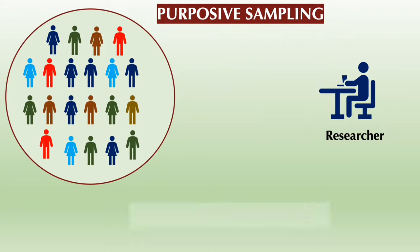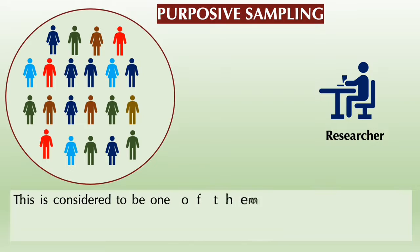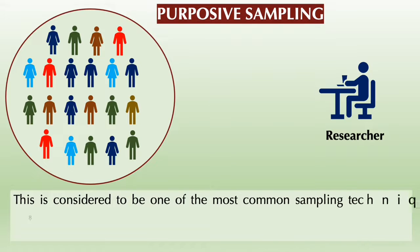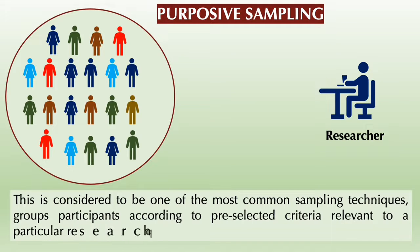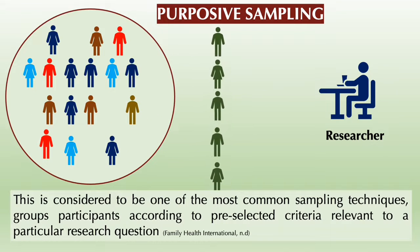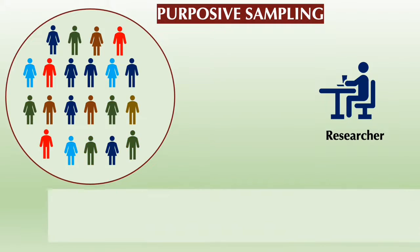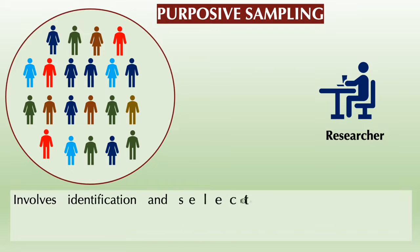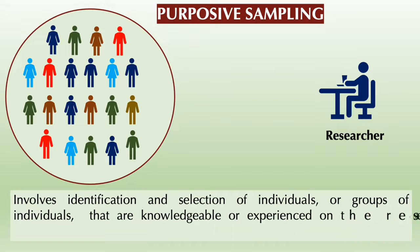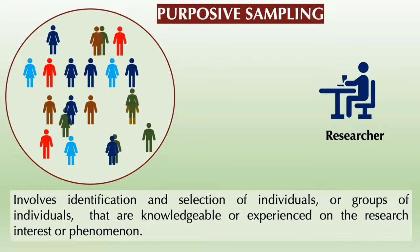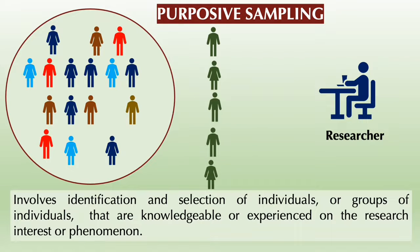Second is purposive sampling. This is considered to be one of the most common sampling techniques. It groups participants according to pre-selected criteria relevant to a particular research question. In purposive sampling, a clear criteria and rationale for inclusion must be established. It is emphasized that this sampling technique involves identification and selection of individuals or groups that are knowledgeable or experienced regarding the research interest or phenomenon.